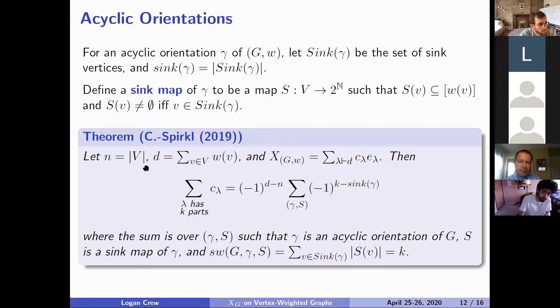So if we have n vertices our total weight is d and we have this chromatic symmetric function expansion then we still have an interpretation of the sum over those lambda with k parts of these coefficients. We have a fixed sign that's just the excess weight of the graph hence the minus one to the total weight more than one per vertex.